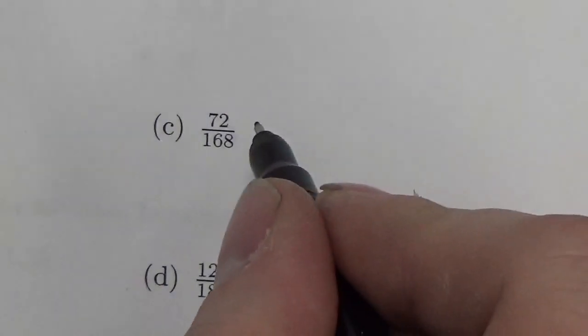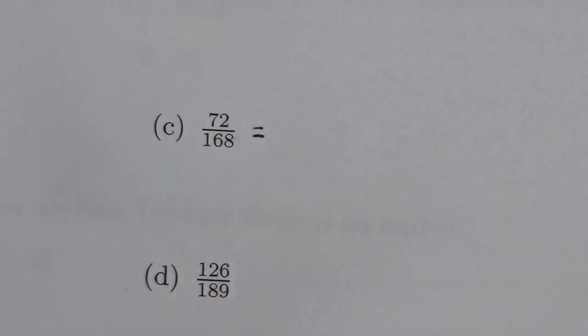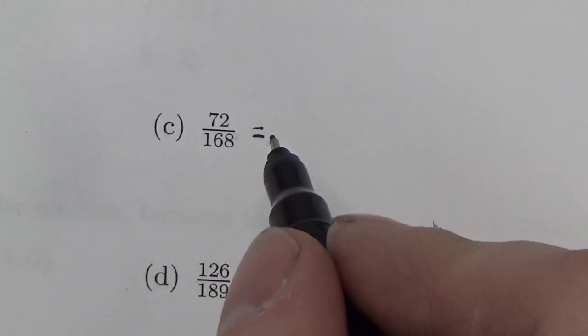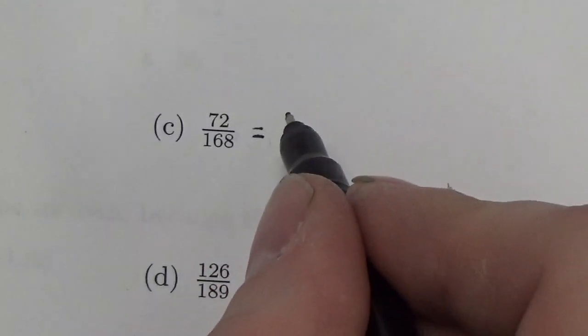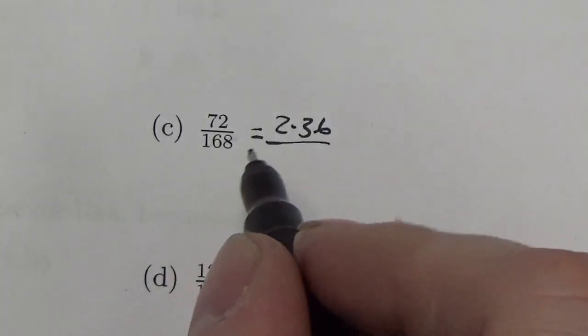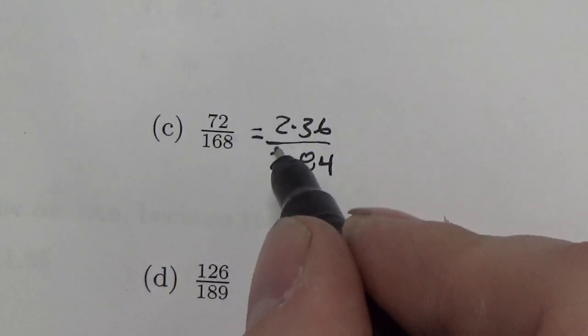Let's take a look at this one. 72 over 168. Well, right off the top of my head, I don't know. But I do see that they're both even. So I'm going to kind of follow that pattern that I just established. So if I take and divide 72 by 2, I'm going to get 36. So I know this is going to be 2 times 36. And 168 divided by 2 is going to be 2 times 84. I cancel those 2s. And now I'm left with these guys right here.